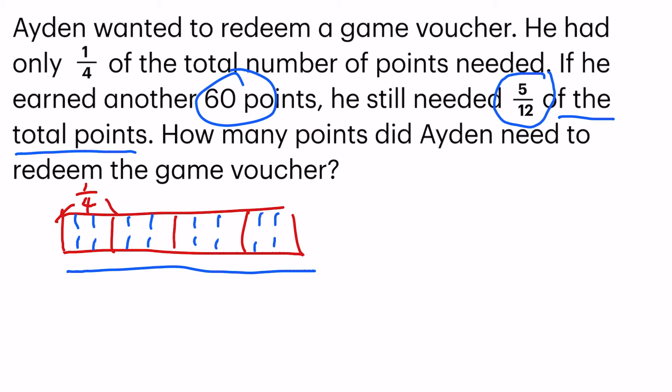So he said that if he had those 60 points, he still needed 5 out of 12. So I'm going to mark down 1, 2, 3, 4, 5 — that's 5 out of 12 that he needed to collect.